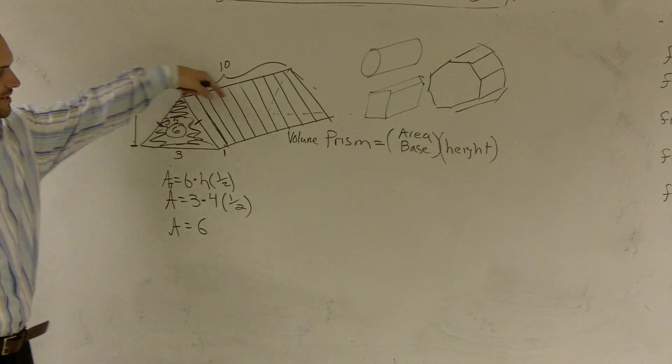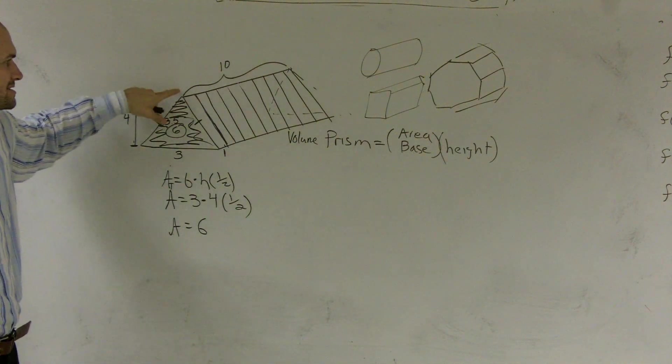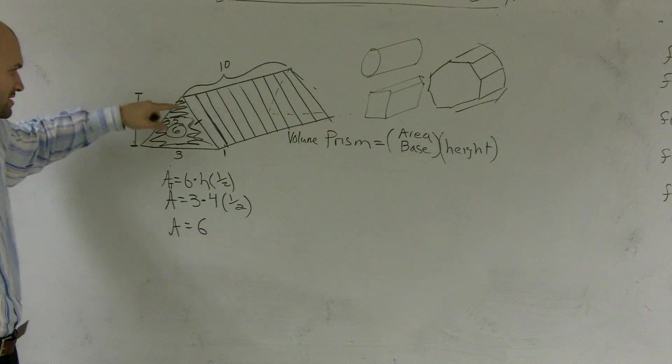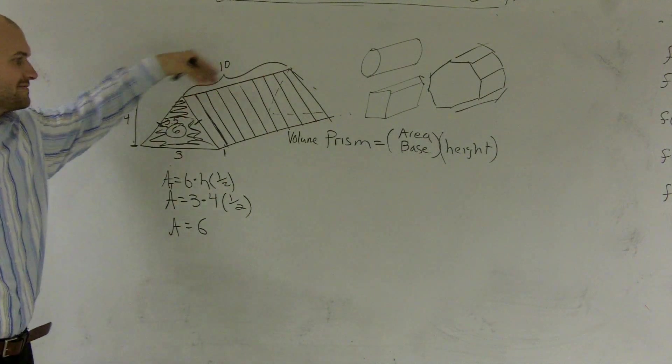Each one of these slices has an area of 6. So instead of adding all the 6s up, I can just multiply it by how many slices I have, which is 1, 2, 3, 4, 5, 6, 7, 8, 9, 10—I have 10 slices.